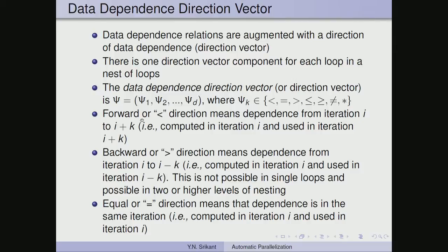The less than direction means it is a forward direction, implying some quantity is computed in iteration i and used in a later iteration i plus k — this is a very common type of direction vector component. The greater than direction means the dependence is from i to i minus k, computed in iteration i and used in iteration i minus k. In single loops this is not possible, but in doubly nested loops or higher level loop nesting it is possible.